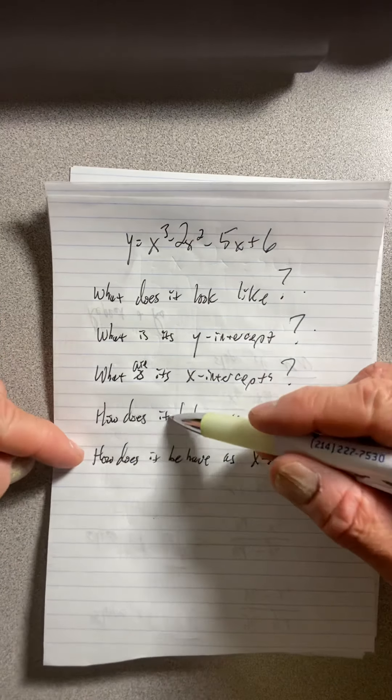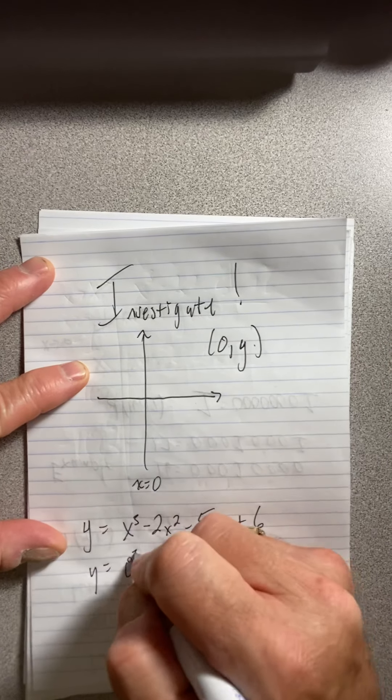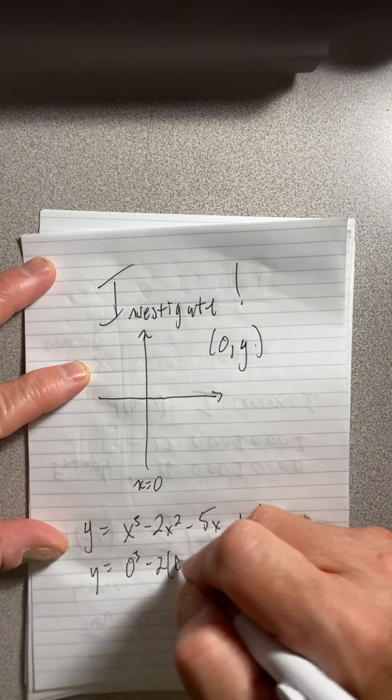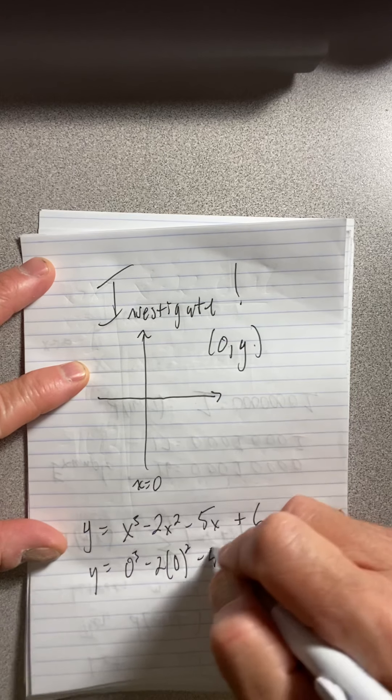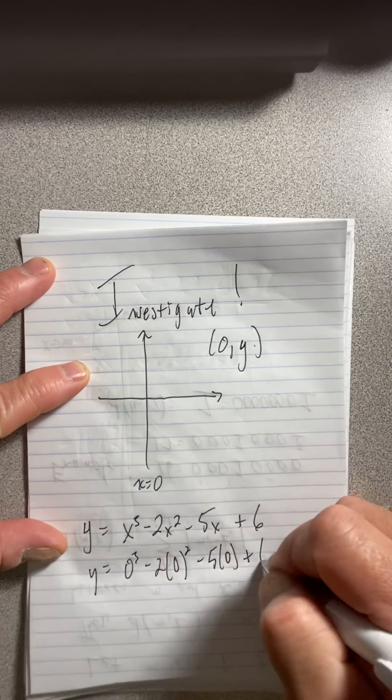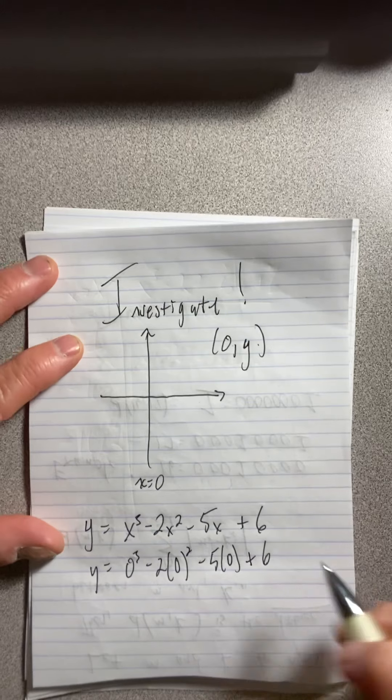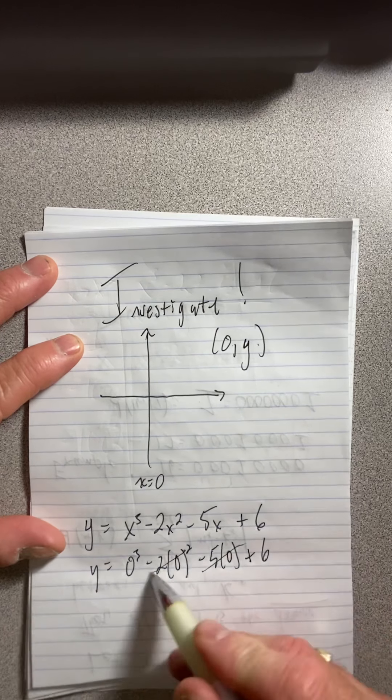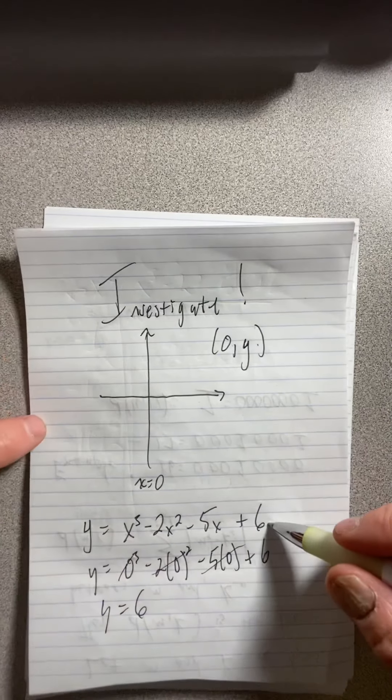The way you answer these questions is you investigate. For instance, a y-intercept is where x is 0, and there's some y value. You investigate. I could teach you rules, and you could memorize them, but if you investigate and find it on your own, you'll figure it out.